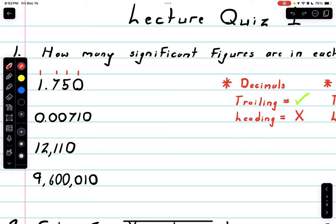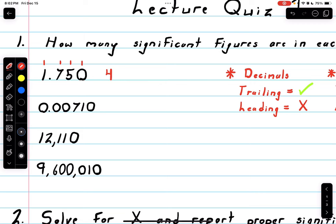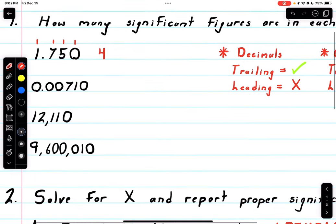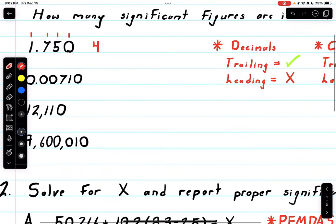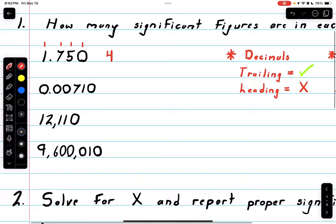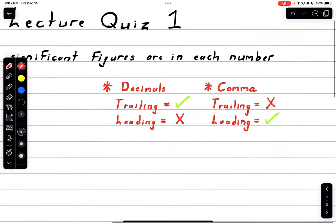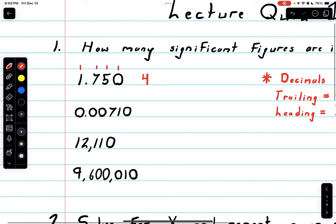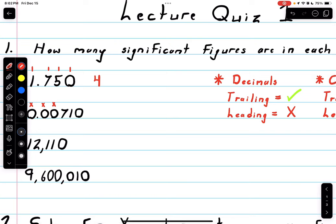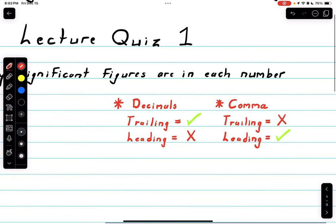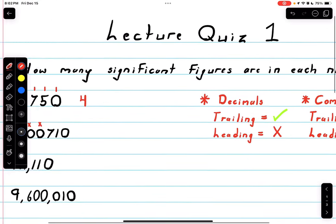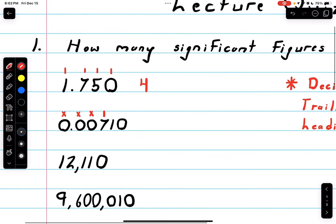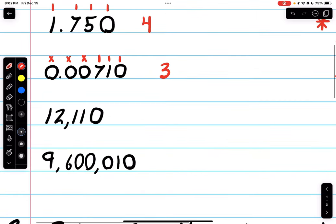Next we have 0.00710. This one is tricky, we're dealing with decimals but have both leading and trailing zeros. Going back to our chart, leading zeros do not count, especially in decimals, so we take those away. But we have trailing zeros in a decimal which are significant. We have one, two, three. Three sig figs right here.